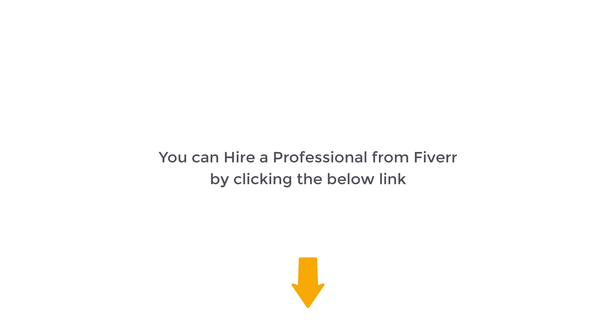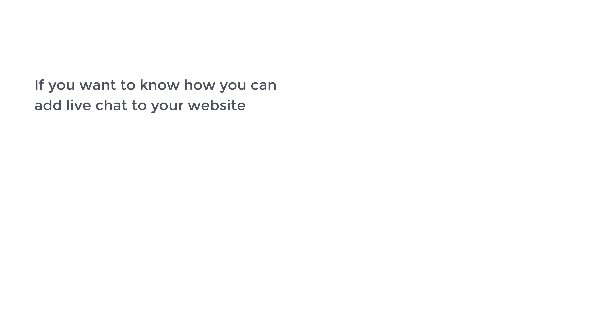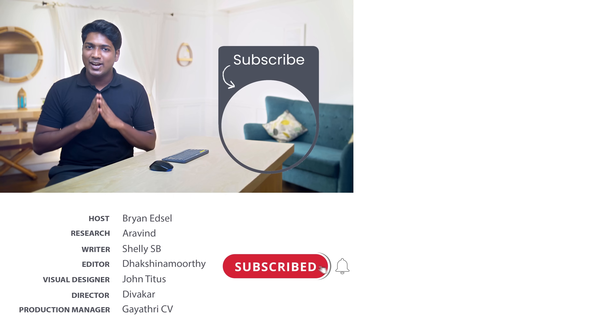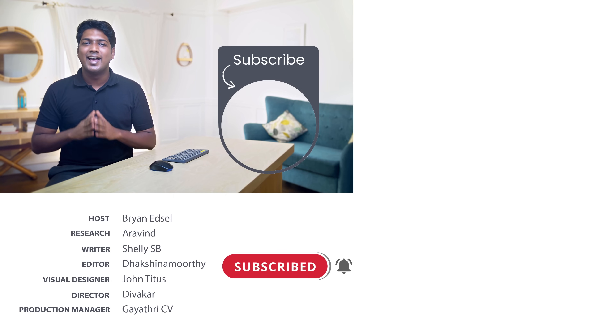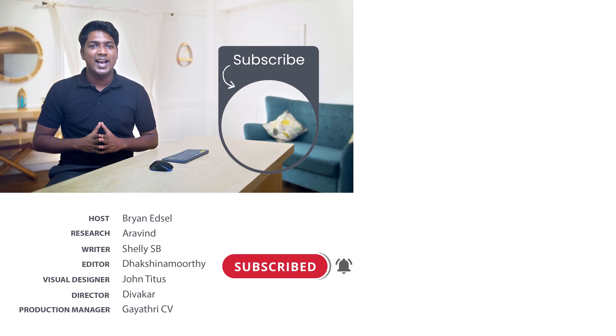So that's it guys, now you know how you can add the UPI payment option on your eCommerce website. If you need any help to maintain your eCommerce website, you can hire a professional from Fiverr by clicking the link below this video. If you want to know how you can add a live chat to your website, you can watch this video. Also make sure you subscribe to Website Learners to get more videos like this one. Thanks for watching, I'll see you in the next video. Take care, bye bye.